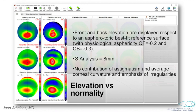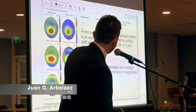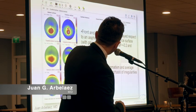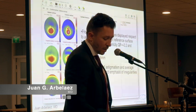In the lower part we have the elevation versus normality maps, which are displayed with respect to an asphero-toric best-fit reference surface with a physiological asphericity — Q of 0.2 for the front and 0.3 for the back — with no contribution of astigmatism, averaging the corneal curvature to emphasize irregularities. You can see how they are very close to the Gaussian maps.